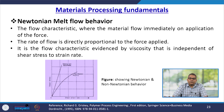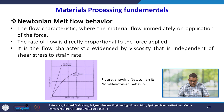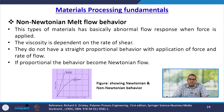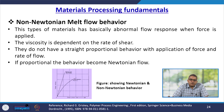Newtonian melt flow behaviour is the flow characteristic where the material flows immediately on application of force, and the rate of flow is directly proportional to the force applied — viscosity is independent of shear stress or strain. Non-Newtonian plastics show an abnormal flow response where viscosity is dependent on the rate of shear, and there is no straight proportional behaviour between force application and rate of flow. If proportional, the behaviour becomes Newtonian flow.